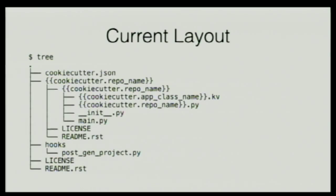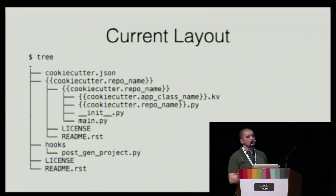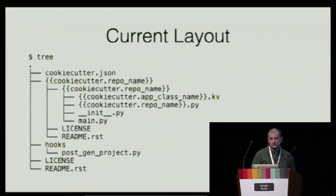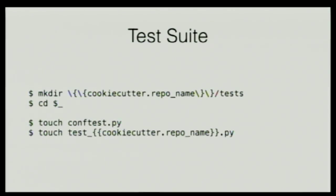So where are we right now? At the root of our project we have the cookiecutter.json, then a templated root folder name for the repository. We have a Kivy language file, a module, an __init__.py, a main.py, a license file generated by GitHub, and a README — I usually use reStructuredText for that, which is why it's not a Markdown file. We also have a hooks folder and the license.